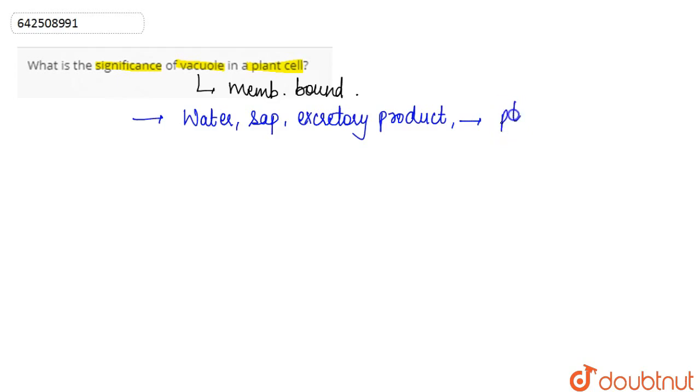In plants, in the plant cell, the vacuoles occupy 90% of the volume of the cell.